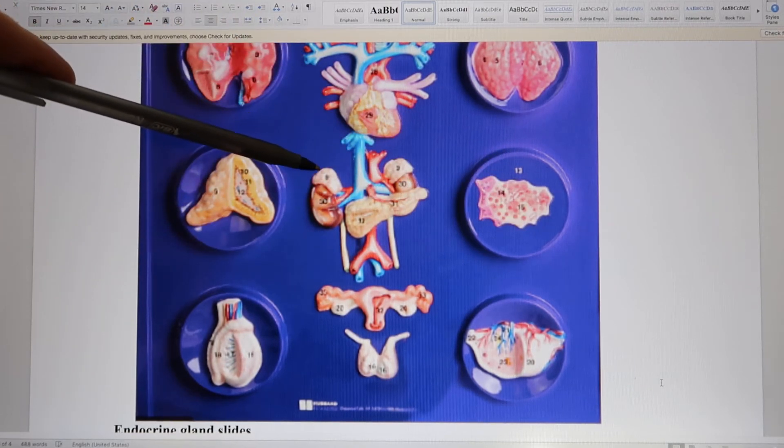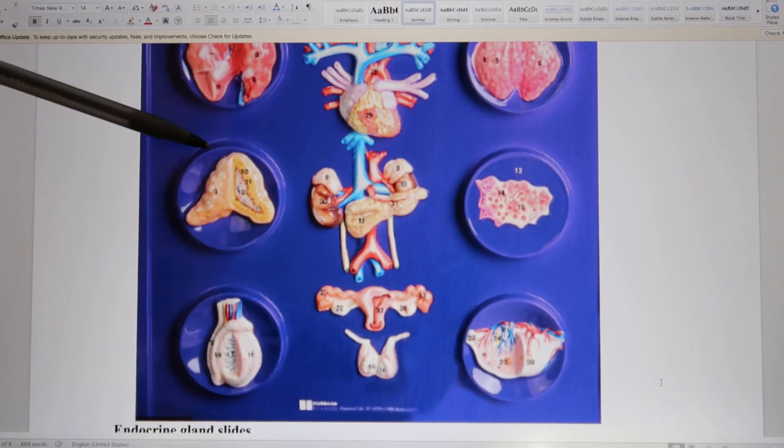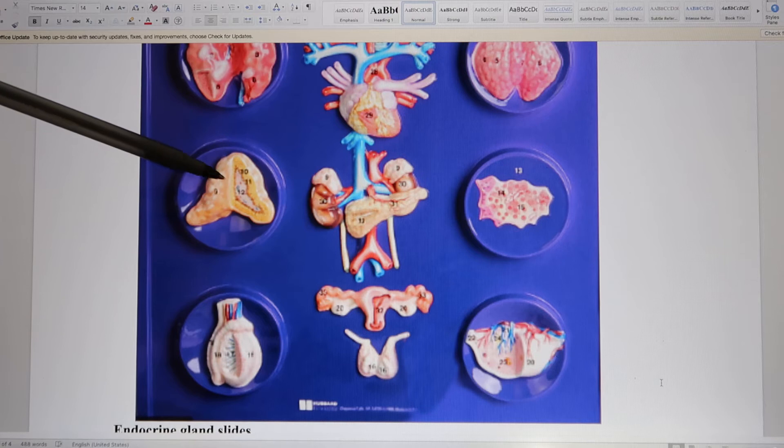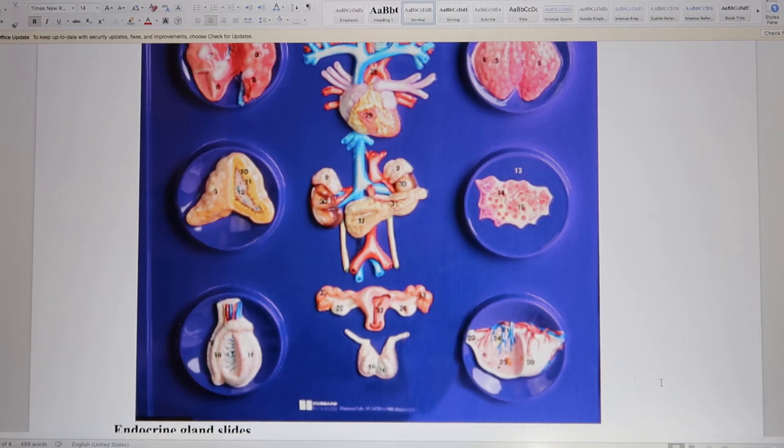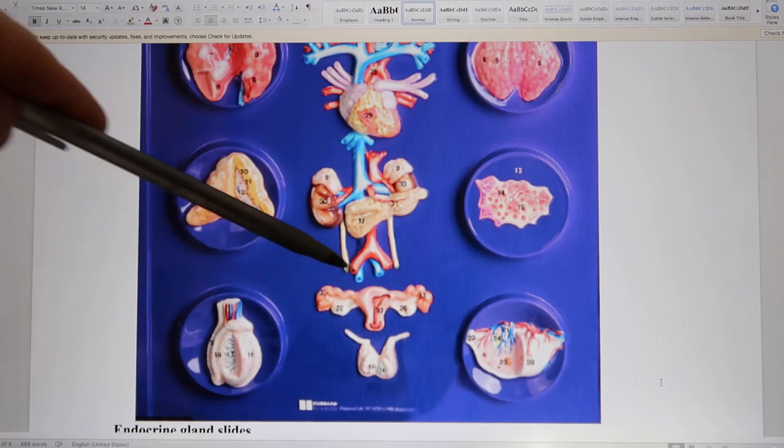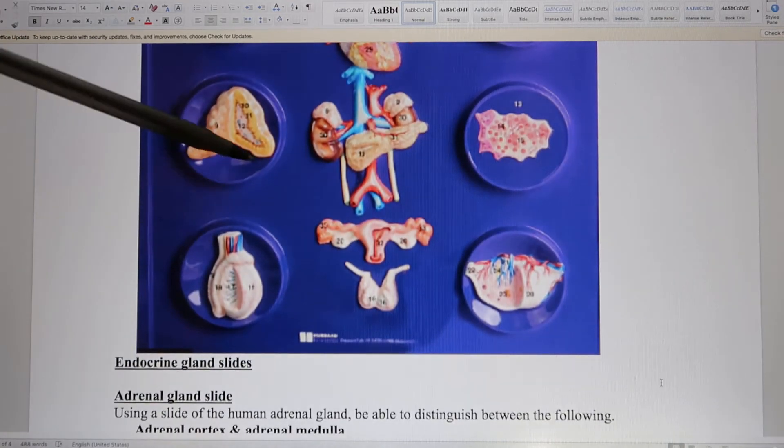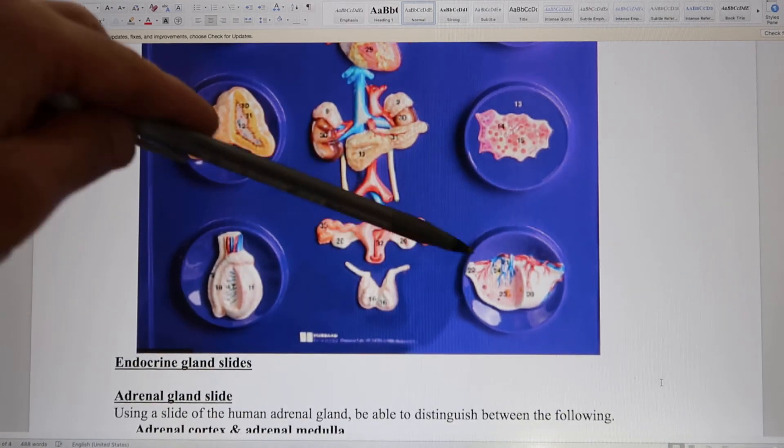And this is your adrenal gland. Adrenal gland is the endocrine gland. So you have a cortex and medulla. And this is the adrenal gland. And these two pretty easy. These are the gonads. So the male, the female, testes, ovaries.